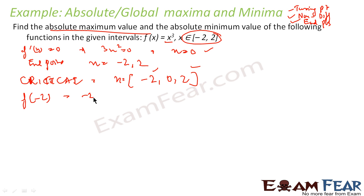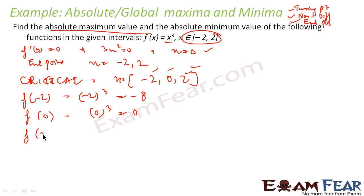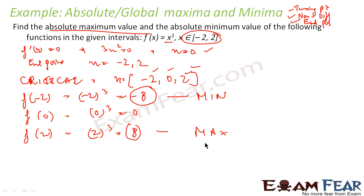So my critical points are x = -2, x = 0, and x = 2. Now find f at each: f(-2) = (-2)³ = -8; f(0) = 0³ = 0; f(2) = 2³ = 8. By observation, -8 is the minimum value and 8 is the maximum value. Thus x = 2 gives the absolute maximum and x = -2 gives the absolute minimum. First find critical points, then find f at all those points, then identify maxima and minima by observation.